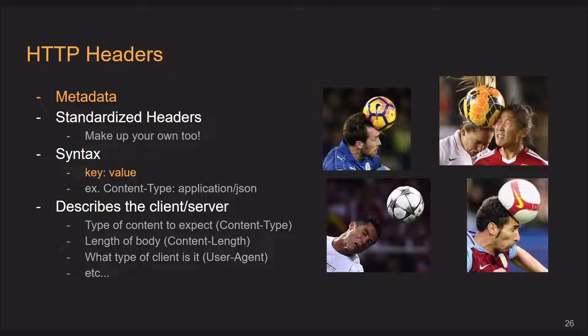For example, 'Content-Type' with a value of 'application/json.' Essentially headers just describe the client and server: what type of content to expect, how long the body is, what type of client it is — so there are mobile styles that could be applied, like whether to send the mobile version of a web page or not. There's a whole bunch of things you can do with headers.